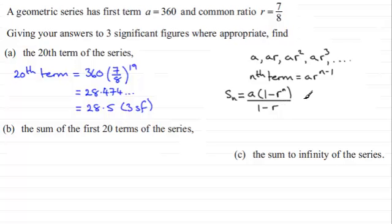Or you could use another version of this where we times top and bottom of the formula by minus 1 and get a times r to the power n minus 1 all over r minus 1. It doesn't matter which one of these formulas you use, you'll arrive at the same answer.